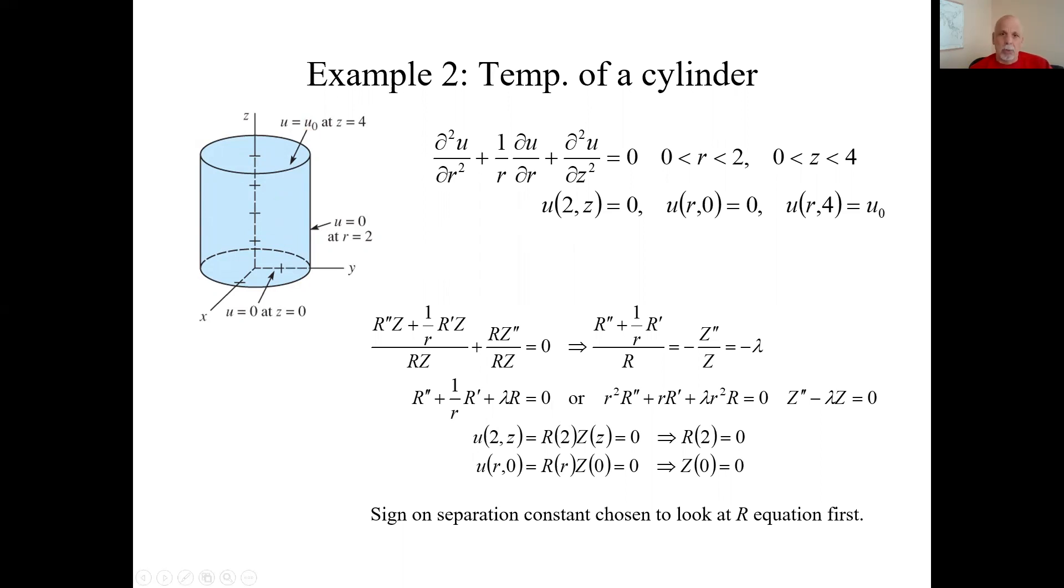Let's separate variables like usual using the product method. We'll say U is the product of big R and big Z, where they are functions only of those individual variables, little r and little z. So this term is going to be R double prime Z. This will be R prime Z, and this will be R Z double prime. That's this numerator up here. So then to separate variables, we'll divide everything through by big R, big Z. And here we've separated variables. All R stuff on one side, all Z stuff on the other.